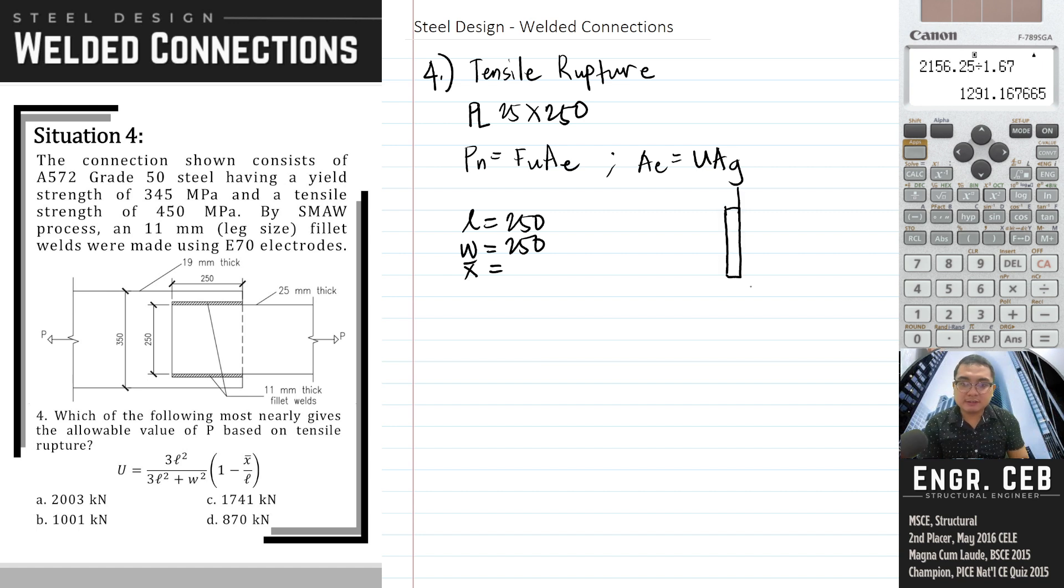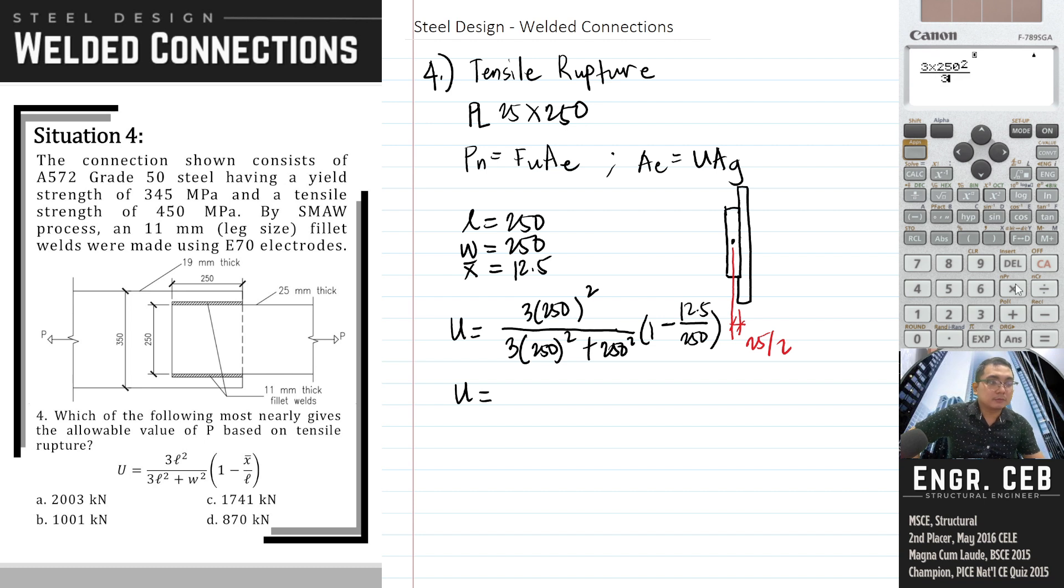X-bar is the distance from the centroid to the plane of connection, or the interface. The thickness of the plate is 25, so this is 25 over 2, which is 12.5. Let's solve for the shear lag factor: U equals 3 times 250 squared over 3 times 250 squared plus 250 squared, times 1 minus X-bar over L.